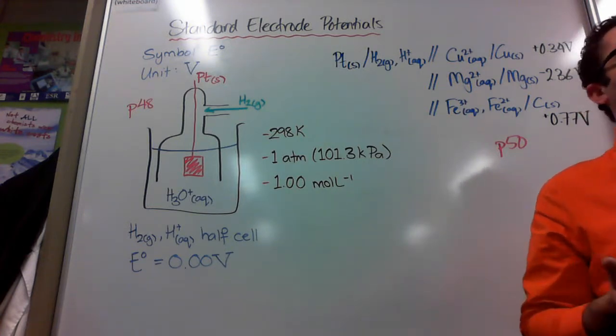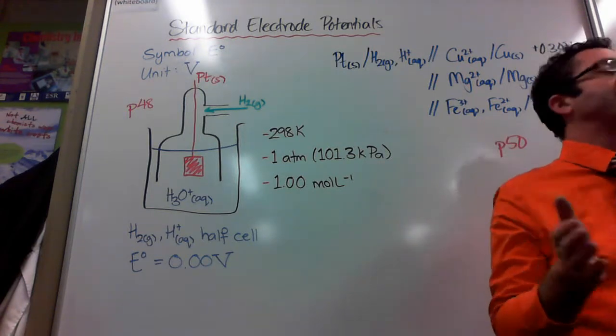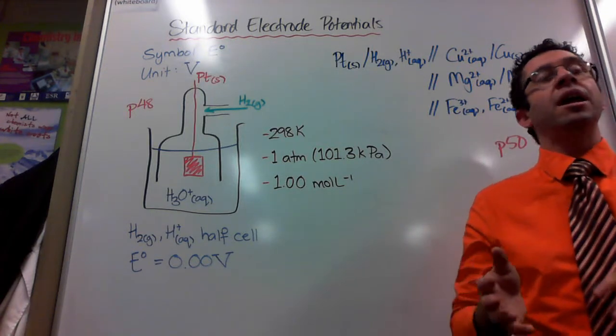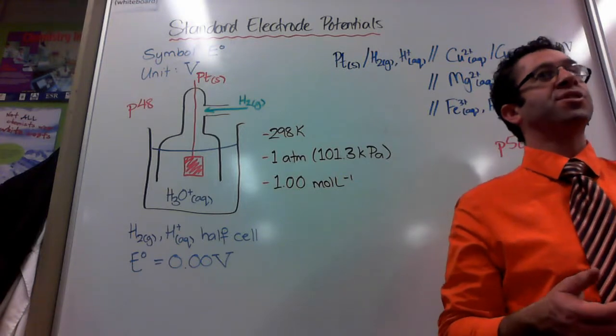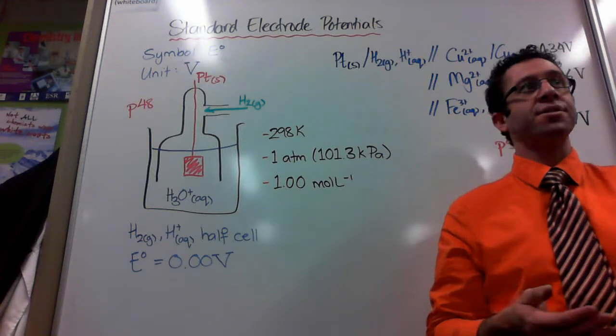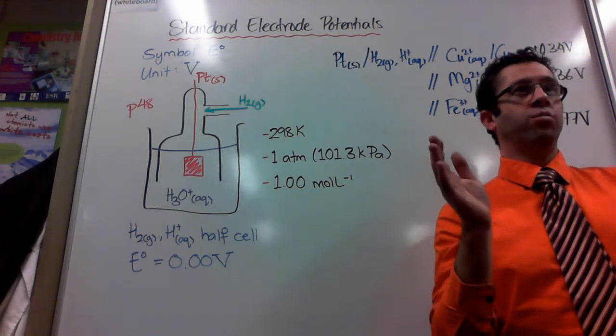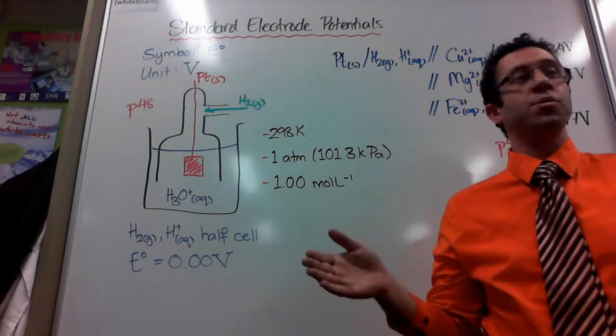The first thing I need to remind you about is that as humans we make up scales that make sense to us. For example, the boiling point of water is 100 degrees Celsius and the freezing point or melting point is zero degrees Celsius. So we've chosen a zero to 100 scale, and that's how we've come up with the Celsius or centigrade scale.